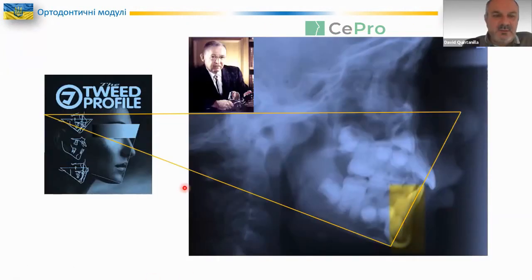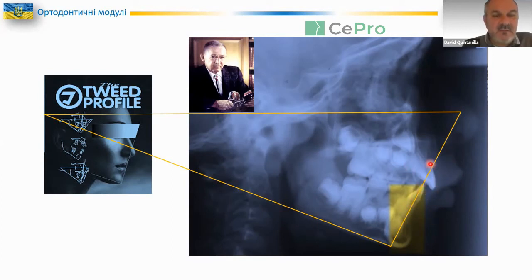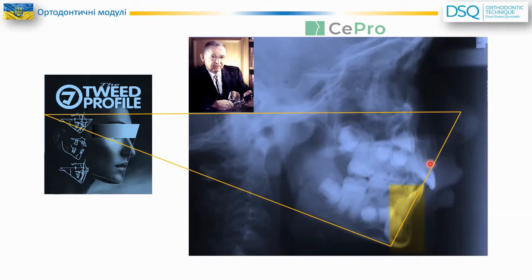Tweed analyzed cephalometric analysis. For Tweed, it was very, very important to control the position of the lower incisor and to avoid its protrusion. When you analyze crowding with models and cephalometric analysis, you can see that many patients need extractions to achieve a good profile. Charles Tweed created a cephalometric model to achieve for patients, in which the position and protrusion of the lower incisor was critical. He proposed removing certain teeth to place the lower incisor in the correct position.